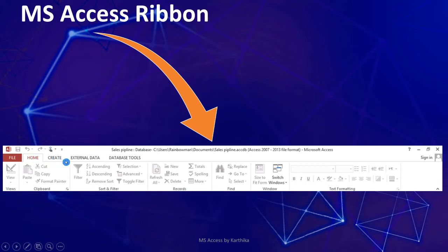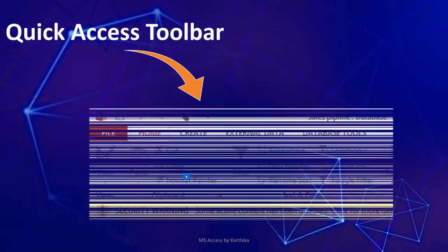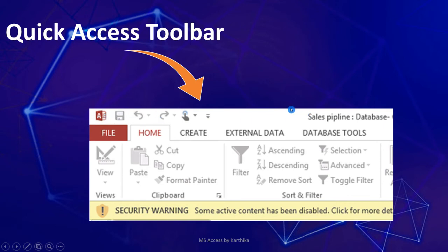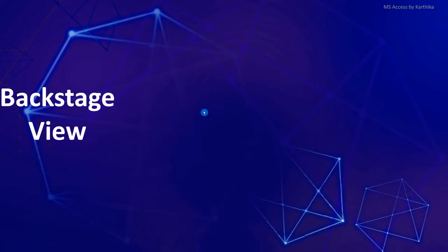Inside the ribbon we have tabs: File, Home, Create, External Data, and Database Tools. Under those tabs, we have groups — Views, Clipboard, Search, and Filter Records — and inside the groups we have various options. This is the MS Access ribbon. Next is the Quick Access Toolbar, available at the left side of the title bar, above the ribbon. The default commands there are Save, Undo, and Redo, and you can add new commands as needed.